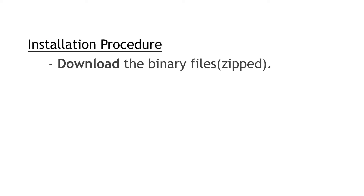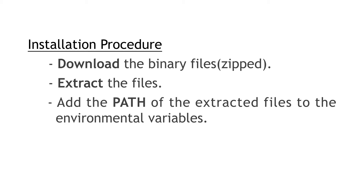So what we are going to do is to first download the binary files, which will be zipped, and then we extract the files, and then we set the path of the extracted files. This path we are setting means we are going to add a path to the environmental variables. So let's begin.